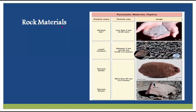Now, as for rock material, we have volcanic ash, lapilli, and volcanic bombs. There are also small stones and volcanic blocks, which are bigger than the smaller stones. This material is called pyroclastic material or tephra.